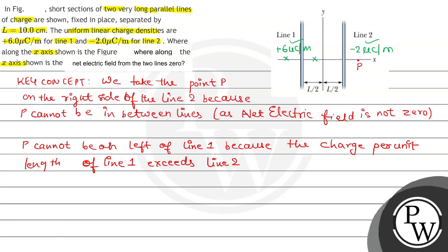This distance is our x distance. Therefore, E_net equals E1 plus E2. This will be equal to 2λ1 divided by 4πε₀(x + L/2), and the second line contributes 2λ2 divided by 4πε₀(x - L/2).